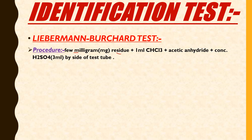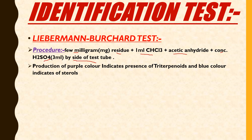In the Liebermann-Burchard Test procedure: take the extract residue, add 1 ml of chloroform (CHCl3), then add acetic anhydride, and then carefully add concentrated H2SO4 along the walls of the test tube. The observation is that a purple color indicates triterpenoids, while a blue color indicates sterols.